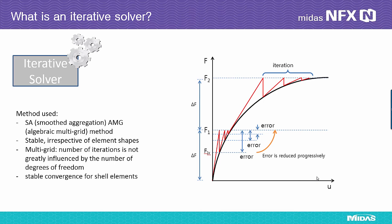An iterative solver uses a method which reduces errors in approximate solutions obtained through an iterative process leading to convergence. It is crucial to rapidly reduce the convergence errors in a small number of iterations. Generally, the number of iterative calculations depends on the preconditioning technique. MinusFX uses the SA smooth aggregation AMG algebraic multigrid method, which is known as a stable preconditioning technique, irrespective of element shapes.